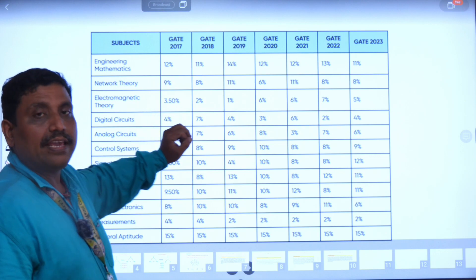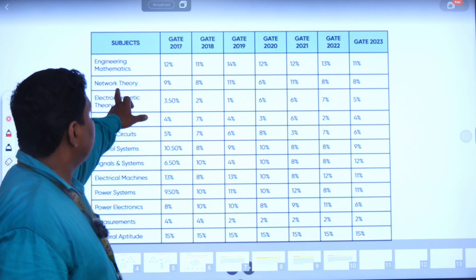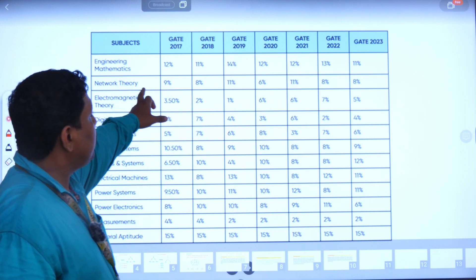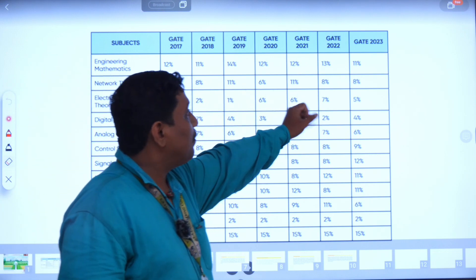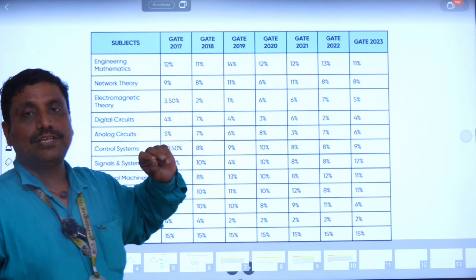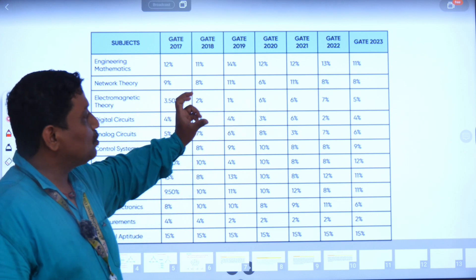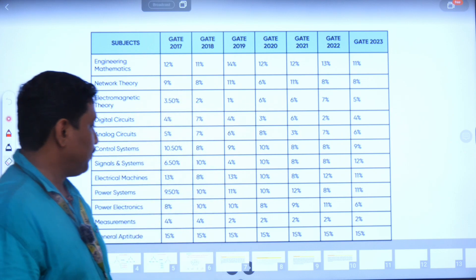I am taking network theory now. In network theory, the average percentage is 8% of questions asked only from network theory.